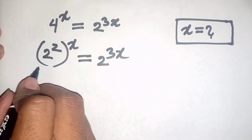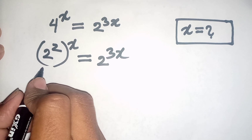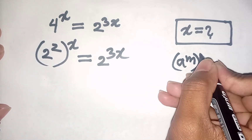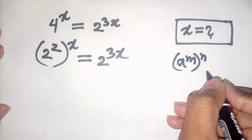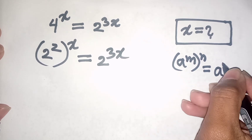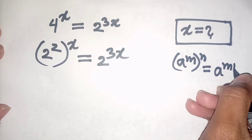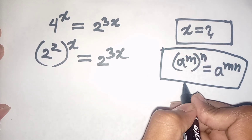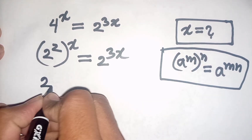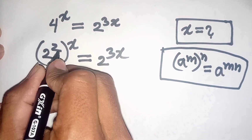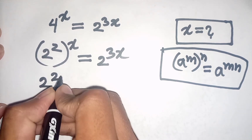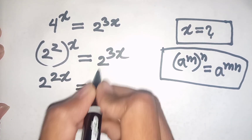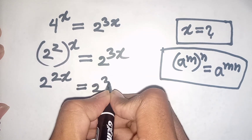Now we can apply the formula: a power m, bracket power n, is equal to a power mn. So according to this formula, we can write 2 power 2 times x, which gives 2 power 2x, is equal to 2 power 3x.